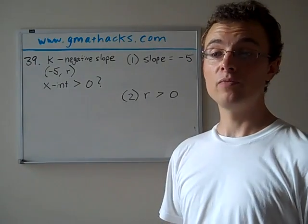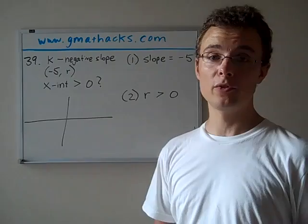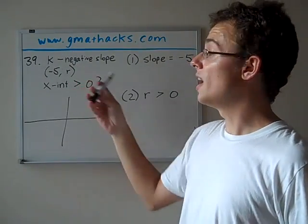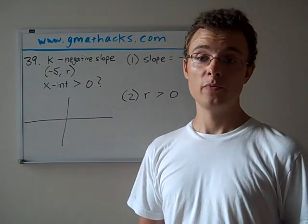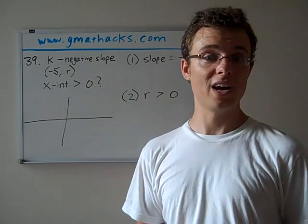So the information we're given is we're in the xy plane, so we're going to be looking at some coordinate geometry and there's a line K. It has a negative slope. First thing, this is something that if you don't already understand intuitively you should spend a little more time on.